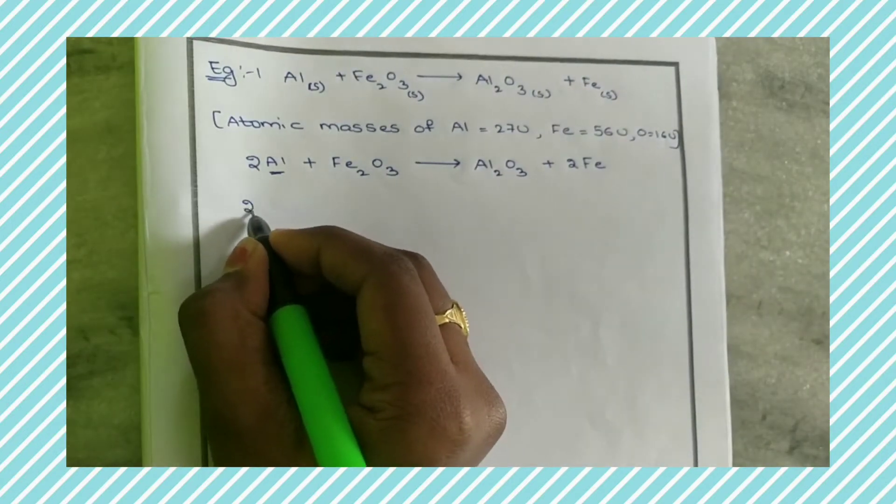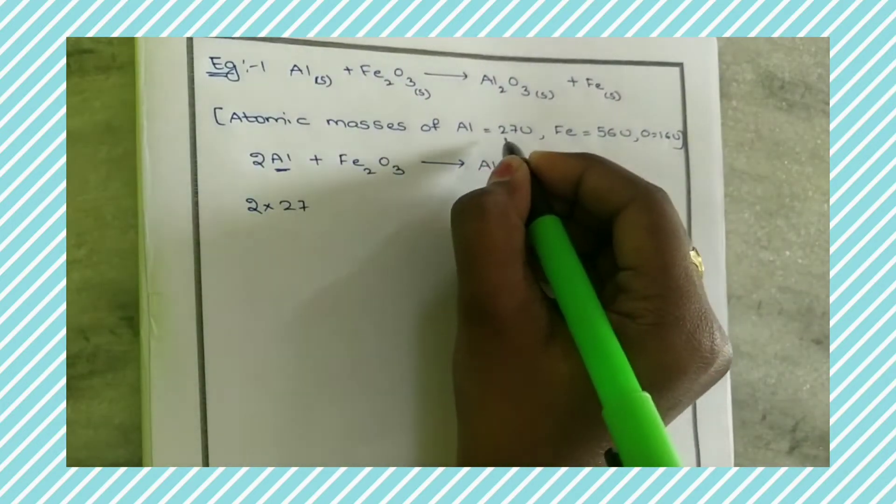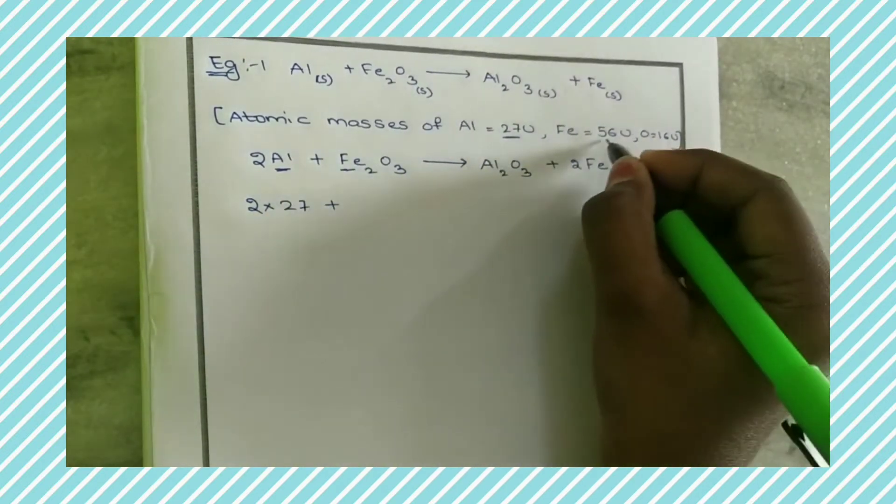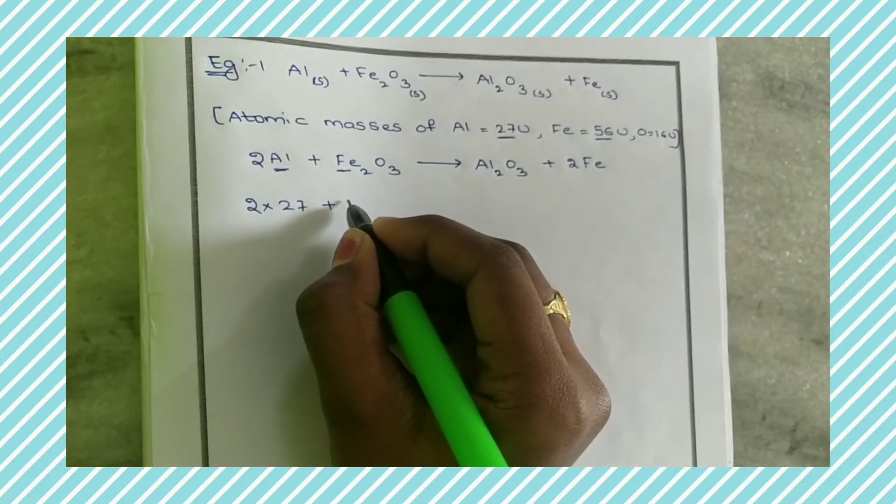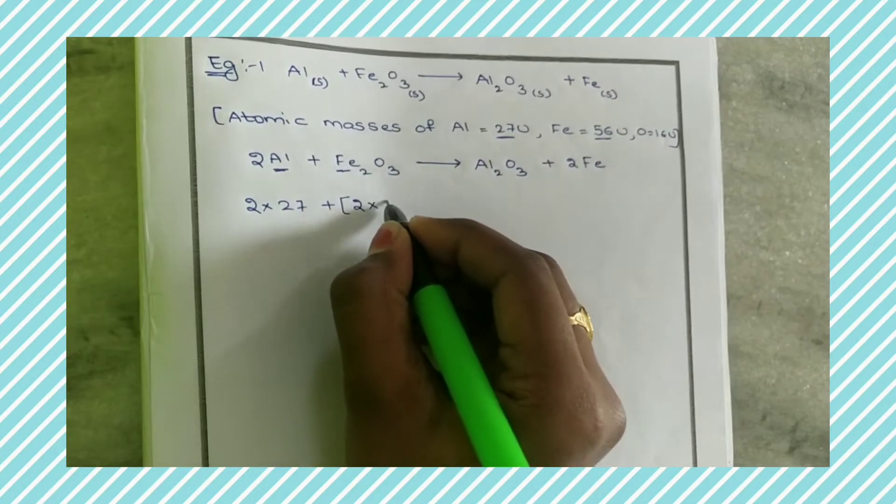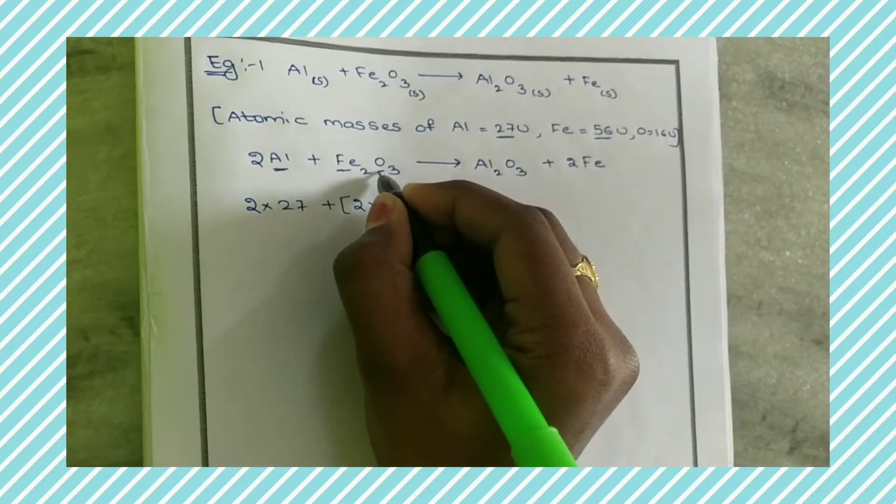There are 2 Aluminum so 2 into 27 plus 2 Irons 2 into 56 plus 3 into 16.